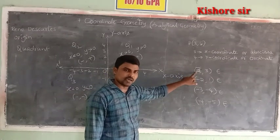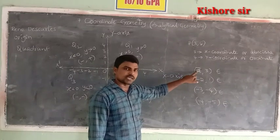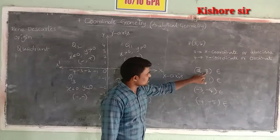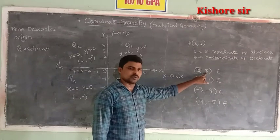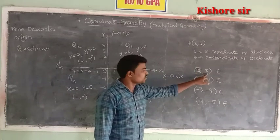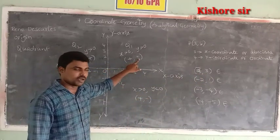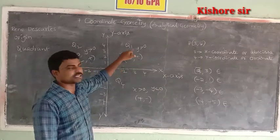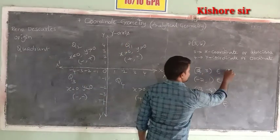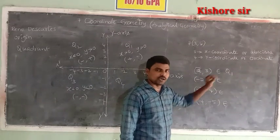First, observe the sign of the x-coordinate. For the point (2, 3), the sign of the x-coordinate is plus and the sign of the y-coordinate is also plus. So the signs are (+, +). Since (+, +) belongs to Quadrant 1, the point (2, 3) belongs to Quadrant 1.